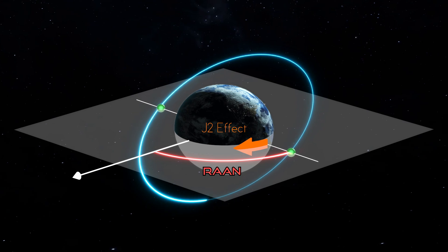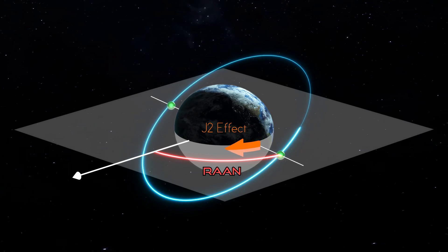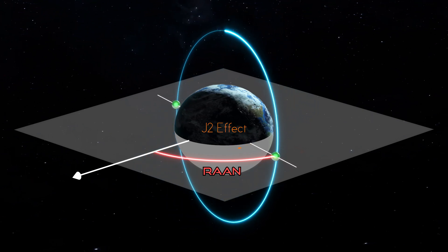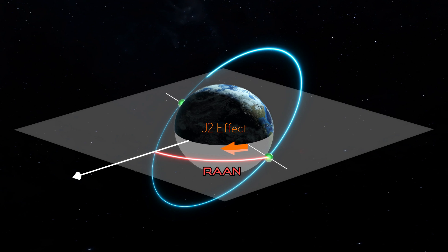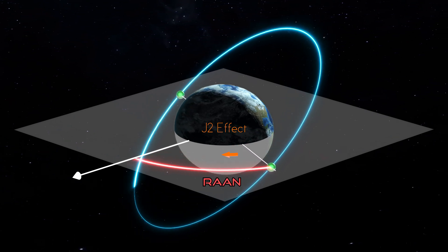The effect J2 has on RAAN is a function of orbital altitude and inclination. The closer the inclination is to 90 degrees, the less the effect J2 has on RAAN. Additionally, as orbital altitude increases, the less J2 affects RAAN — consistent with the gravity educational aid, where greater distance means less gravitational force. There is one orbit type that leverages J2's effect on RAAN: the sun-synchronous orbit.